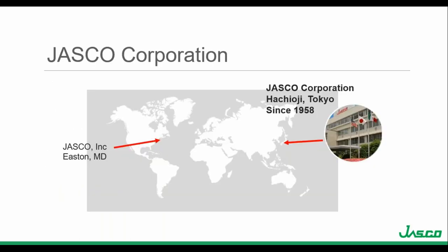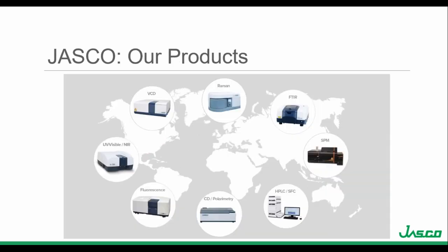In case you missed the last presentation, JASCO Corporation, or the Japan Spectroscopic Company, was founded in 1958 by a Nobel Laureate spectroscopist. Today, our headquarters and factory are in Hachiyoji, Japan, with our Americas office located on the eastern shore of Maryland. While the first instrument developed was an IR spectrophotometer, JASCO now offers a wide range of spectroscopy and chromatography instruments, including circular dichroism, where we have been the world leader in research and production since 1961.